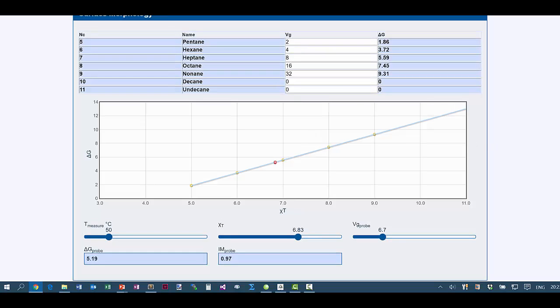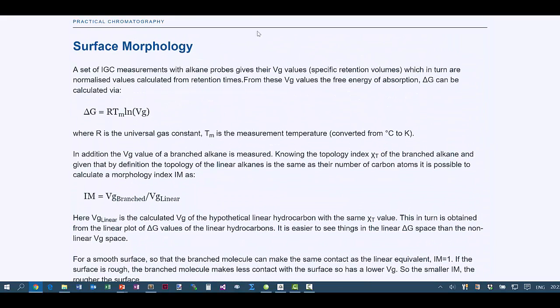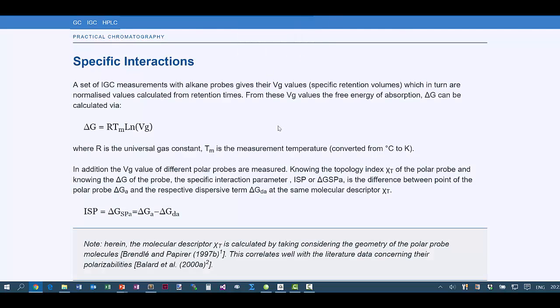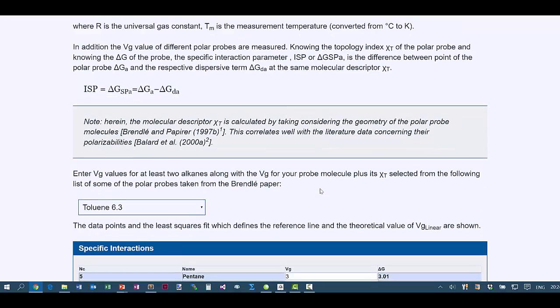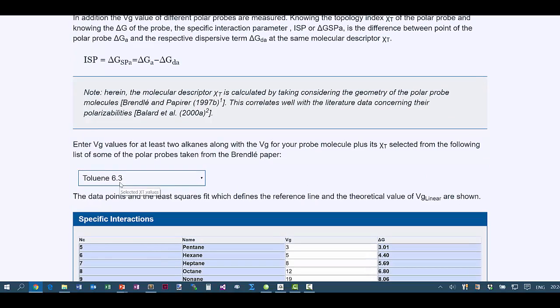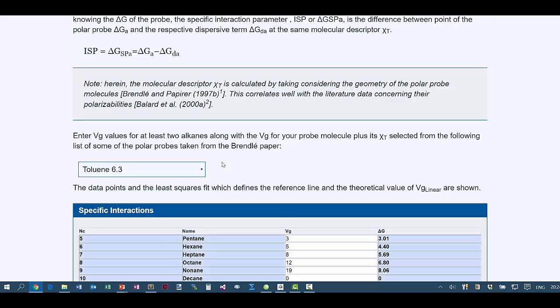We can do a similar experiment not just with an alkane but with something like toluene. We can get a specific interaction parameter ISP, which is the ratio of the delta G from that probe compared to the delta G had that probe been an alkane. Again we need a topology index Chi T, and we know that toluene behaves like an alkane with 6.3 carbons.